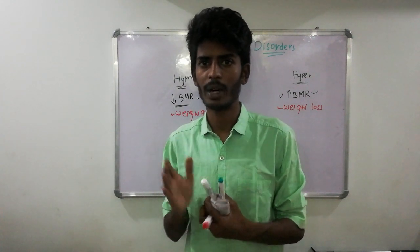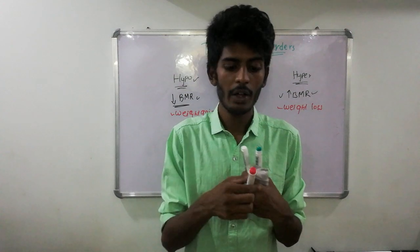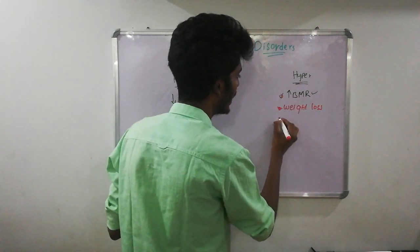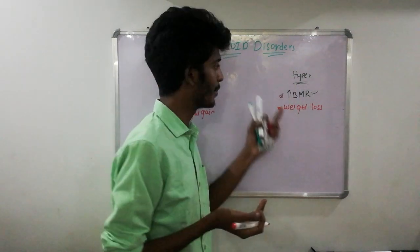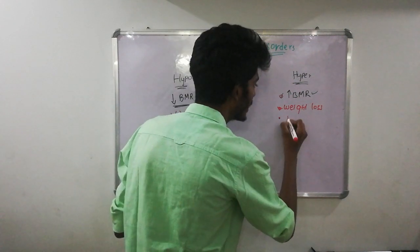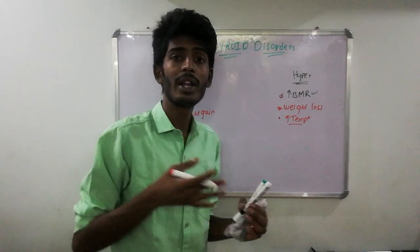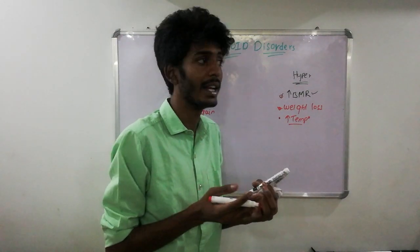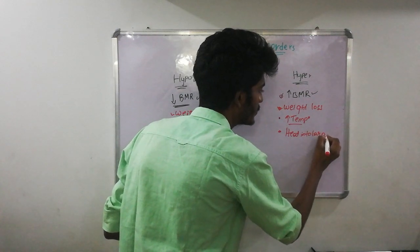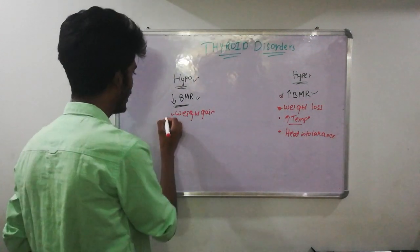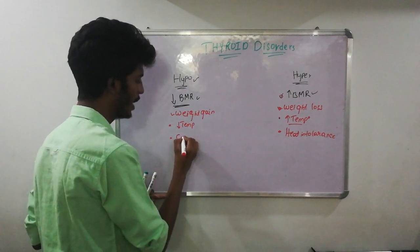When basal metabolic rate increases, body temperature also increases. A hyperthyroidism patient may complain of feeling feverish, but this is actually elevated body temperature due to hypermetabolism. Because their body temperature is already elevated, they cannot tolerate more heat — this is called heat intolerance. The opposite happens in hypothyroidism: body temperature is lower and the patient has cold intolerance instead.